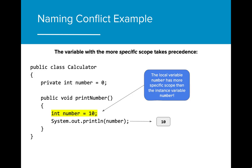In this example, the instance variable number and the local variable number share the same name. When number is printed out in the printNumber program, the result is 10, not 0, because the local variable number is more specific in scope than the instance variable.